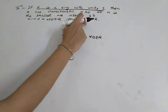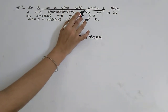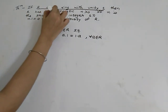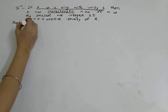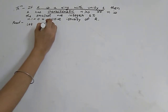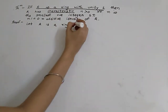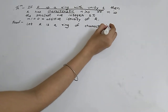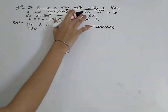In Case 1, suppose this direction is true: R has characteristic n which is greater than 0, and we have to prove that n is the smallest positive integer such that this holds. Let's start the proof. Suppose R is a ring of characteristic n greater than 0.